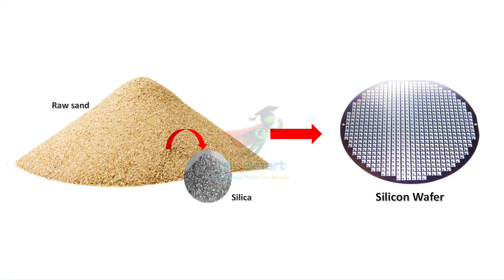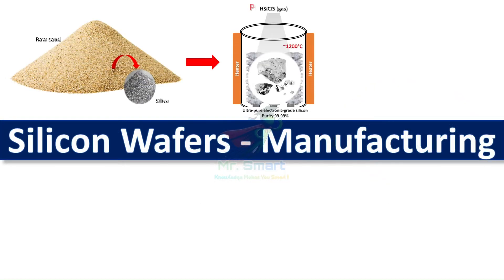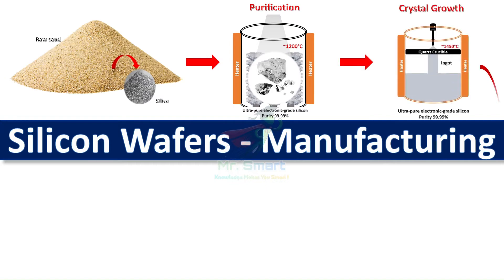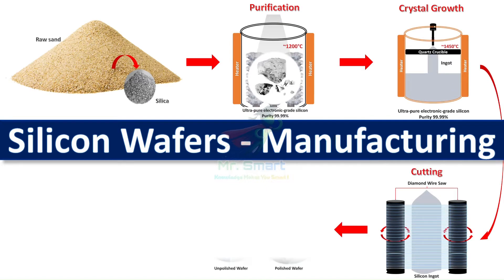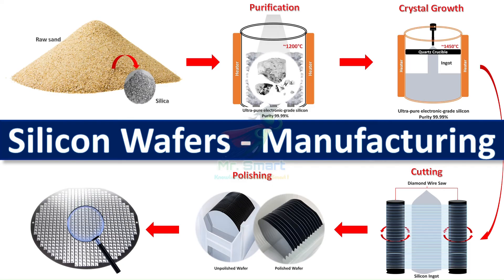The silicon wafer manufacturing process involves five key steps: purification, crystal growth, cutting, polishing, and inspection. Each step requires incredible precision to meet the rigorous standards of modern technology.